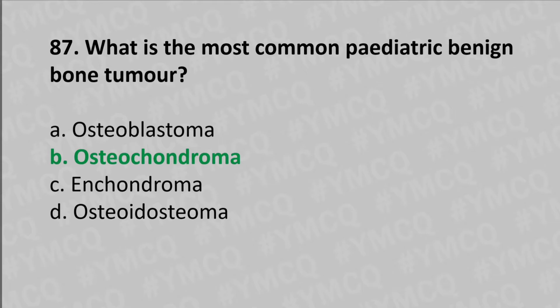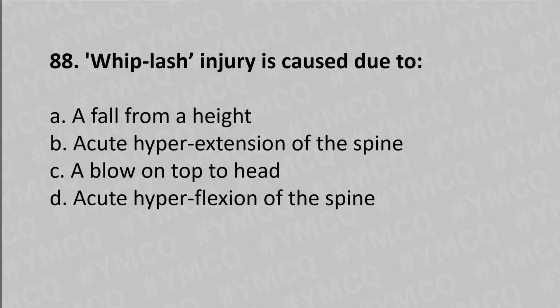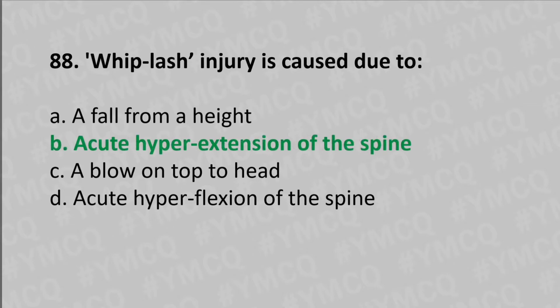Moving to our 88th question: whiplash injury is caused due to option A a fall from a height, option B acute hyperextension of the spine, option C a blow on the top of the head, option D acute hyperflexion of the spine. The answer is option B, acute hyperextension of the spine.